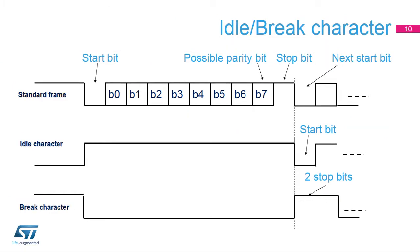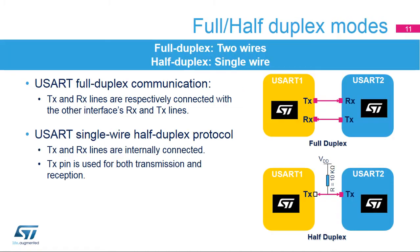This slide shows an example of 8-bit data frames configured with 1 stop bit. An idle character is interpreted as an entire frame of 1s, including the number of stop bits. A break character is interpreted on receiving 0s for a frame period; at the end of the break frame, 2 stop bits are inserted. The USART supports full-duplex communication, where TX and RX lines are respectively connected with the other interface's RX and TX lines. The USART can be configured to follow a single-wire half-duplex protocol, where the TX and RX lines are internally connected. In this communication mode, only the TX pin is used for both transmission and reception. The TX pin is always released when no data is transmitted, thus it acts as a standard I/O in idle or reception modes.